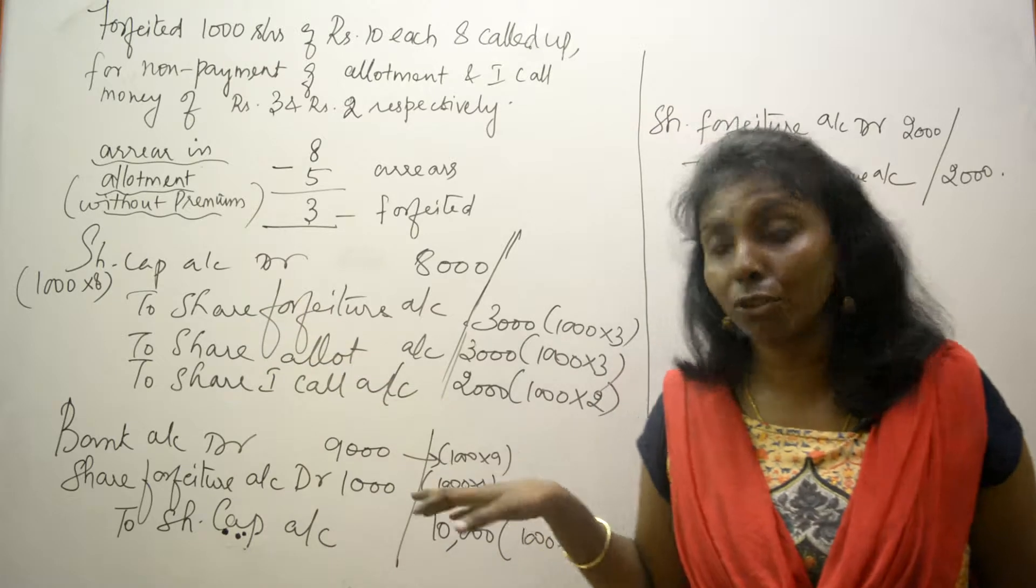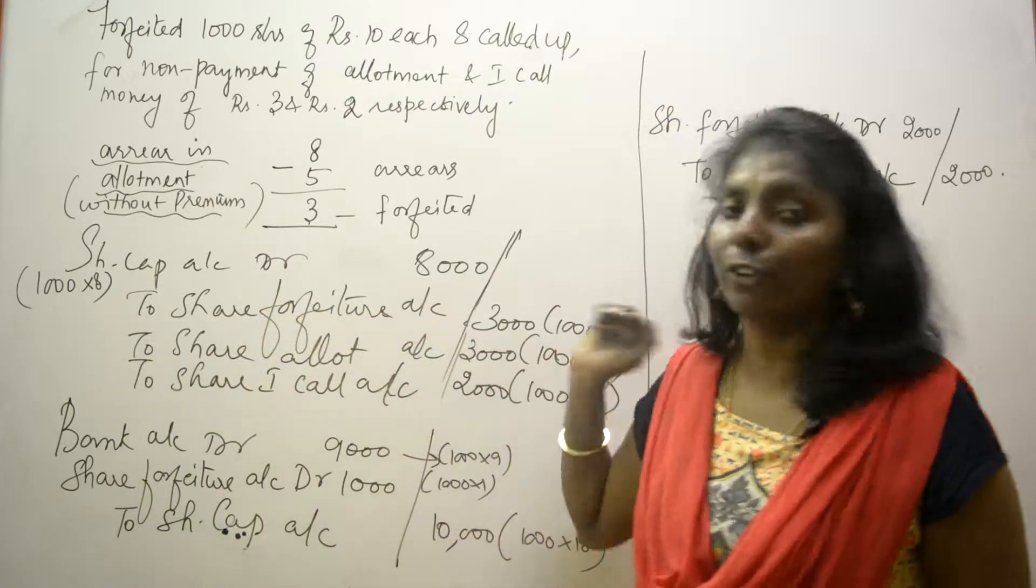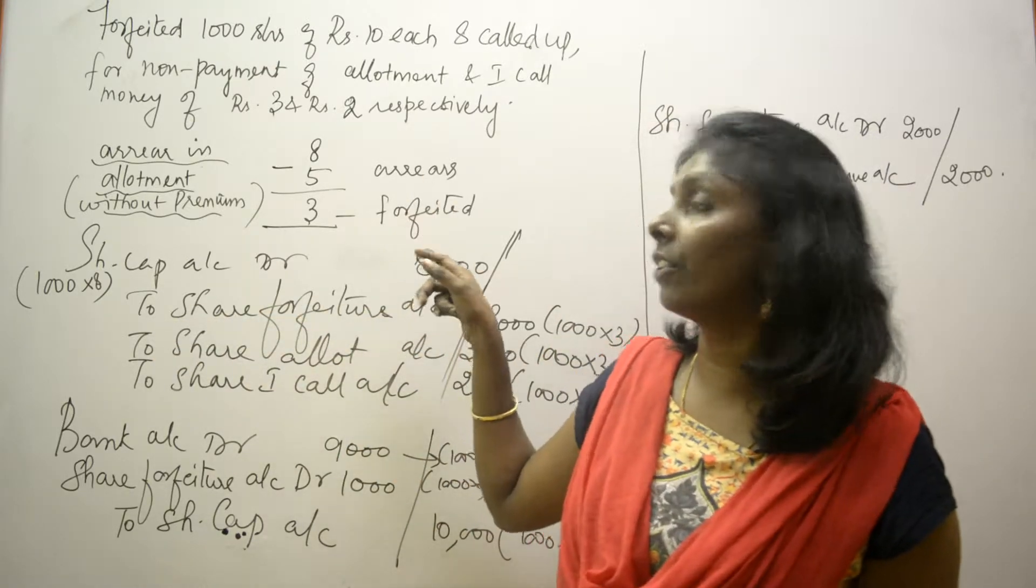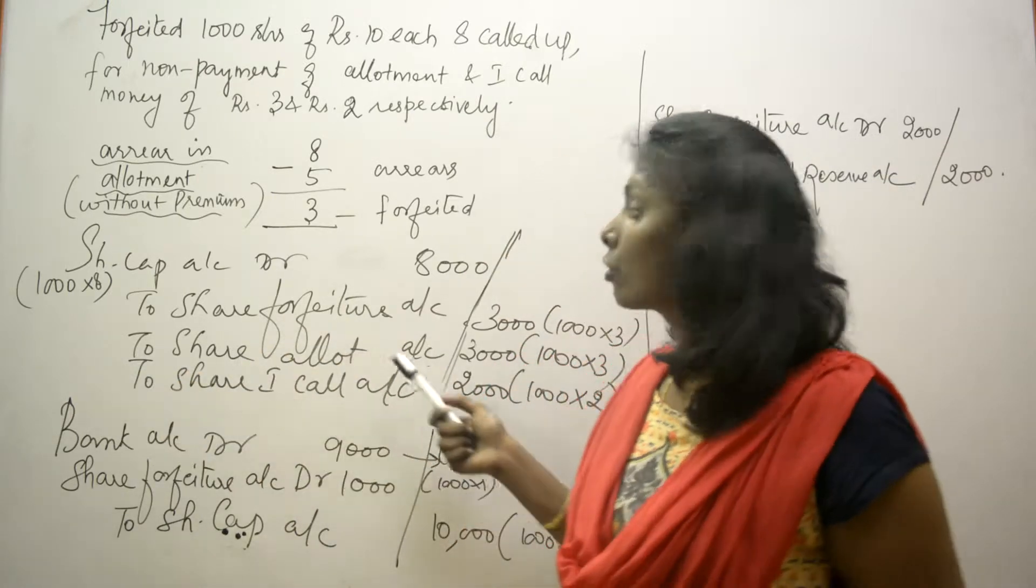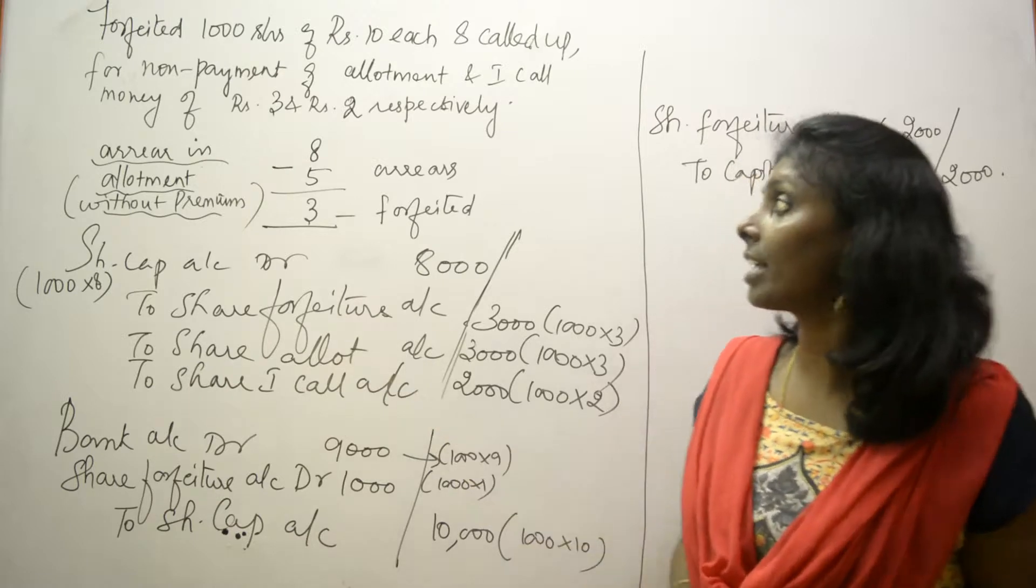Now look at the entries. I have debited share capital as usual to share forfeiture, and here I have arrears in both allotment and first call, so it is to share allotment and to share first call account.